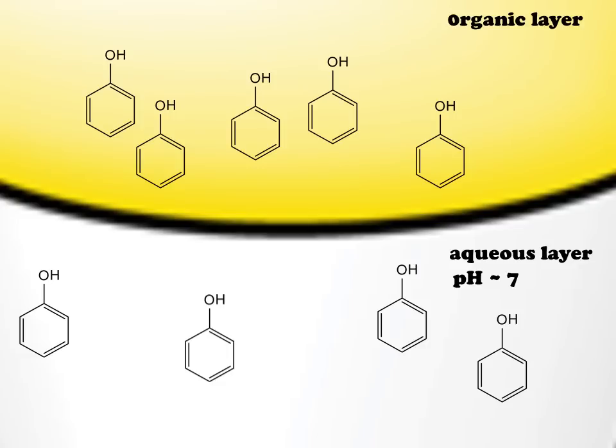The quantity which partitions is dictated by the partitioning coefficient. In this case, 1.25. So if we were to use equal amounts of organic and aqueous layers, we expect approximately four-ninths of the phenol to partition into the aqueous layer.